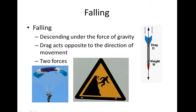In falling, there are only two forces present: weight and drag. Weight pulls the object down towards the Earth under the force of gravity, and drag acts opposite to the direction of movement — so in this case drag acts upward to oppose the downward movement. If you're falling, you want to maximize drag in order to fall slower, and that is what a parachute does: it maximizes drag to slow the velocity of falling towards the Earth.